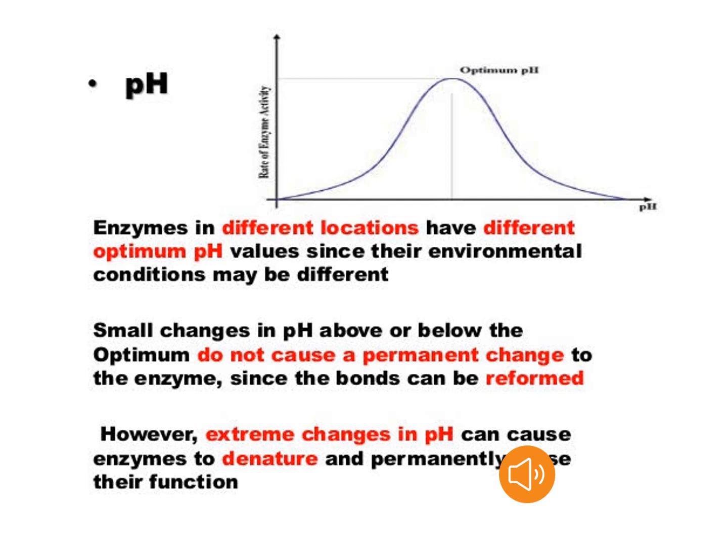The next factor mentioned here is pH. Here you can see a graph in which on the y-axis, rate of enzyme activity is shown, and on the x-axis, different pH range is shown. Our first point is that enzymes in different locations have different optimum pH, since their environmental conditions may be different. Small changes in pH above or below the optimum do not cause a permanent change to the enzyme.